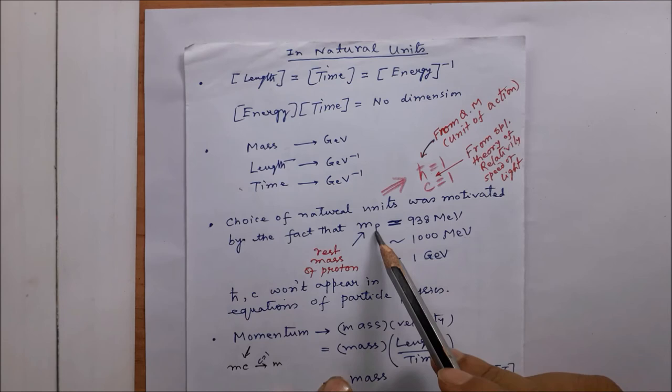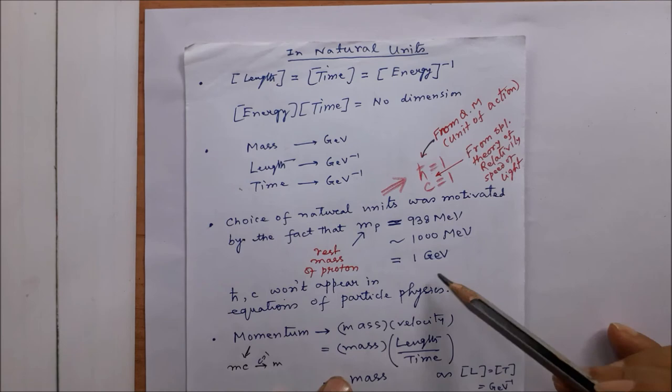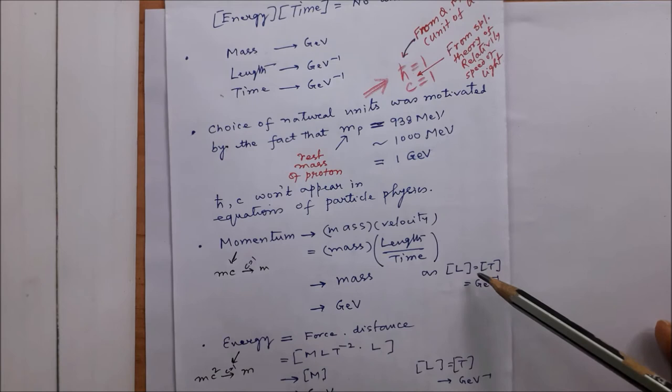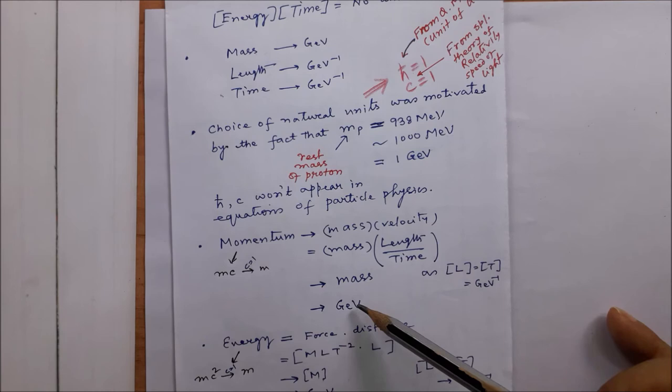The proton mass is 938 MeV, which is of the order of 1 GeV. So in equations of particle physics h-cross and c will not appear, and everything is expressed in terms of energy units. Momentum is mass times velocity; velocity is length over time, and since length and time are both in GeV-inverse they cancel out, leaving just mass — so momentum is expressed in units of GeV.